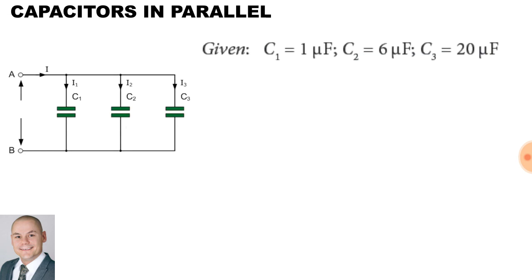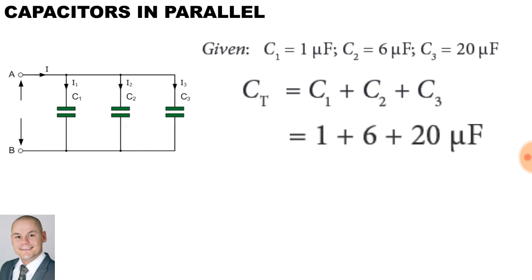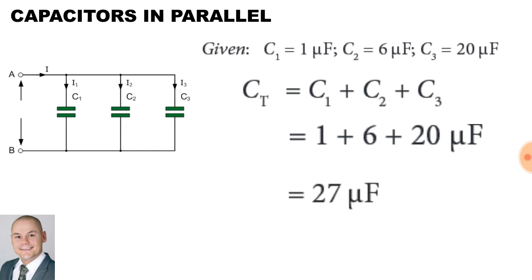To calculate the total capacitance in parallel, we use the formula as though they are resistors in series. We have three capacitors connected in parallel with 1 microfarad, 6 microfarad, and 20 microfarad. Simply adding them together — C1 plus C2 plus C3 — gives us 1 plus 6 plus 20, for a total of 27 microfarad.